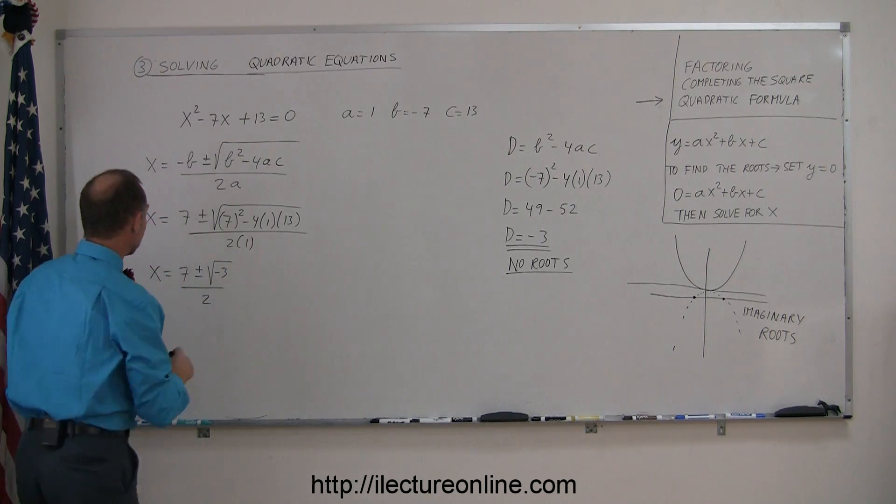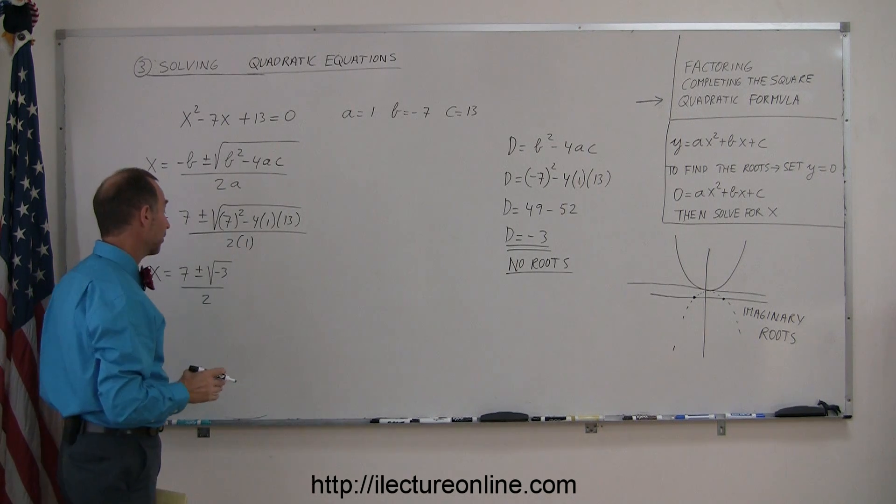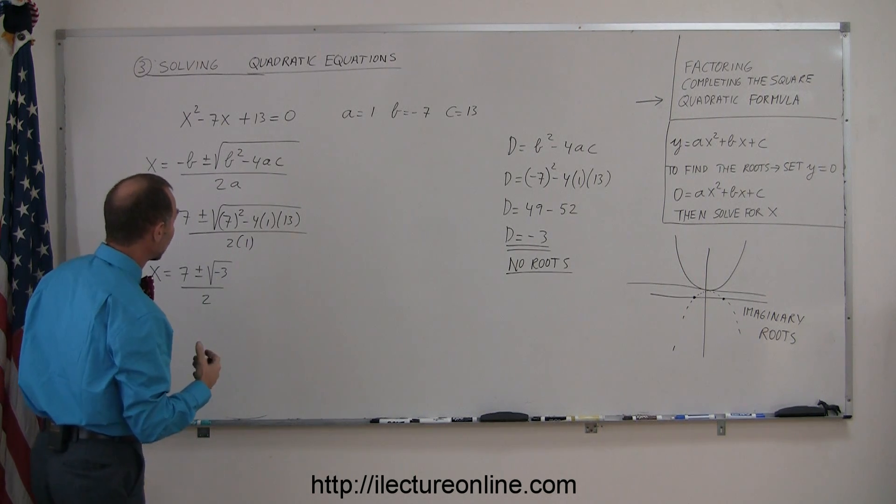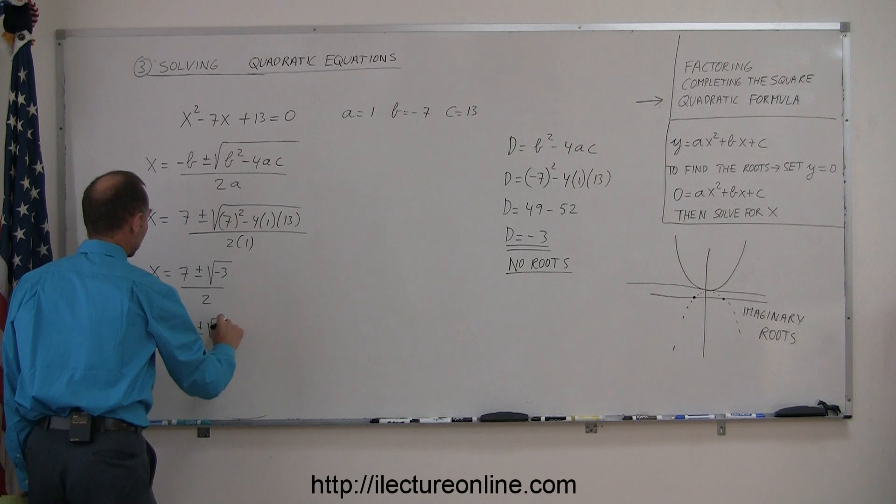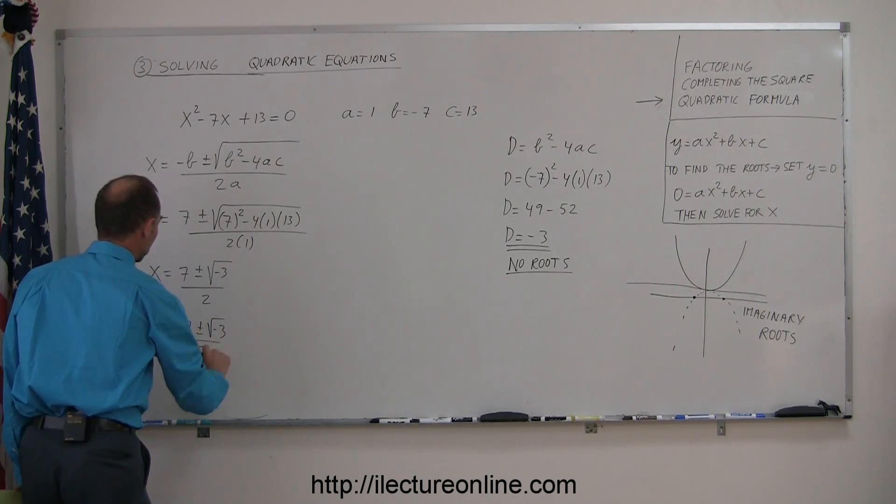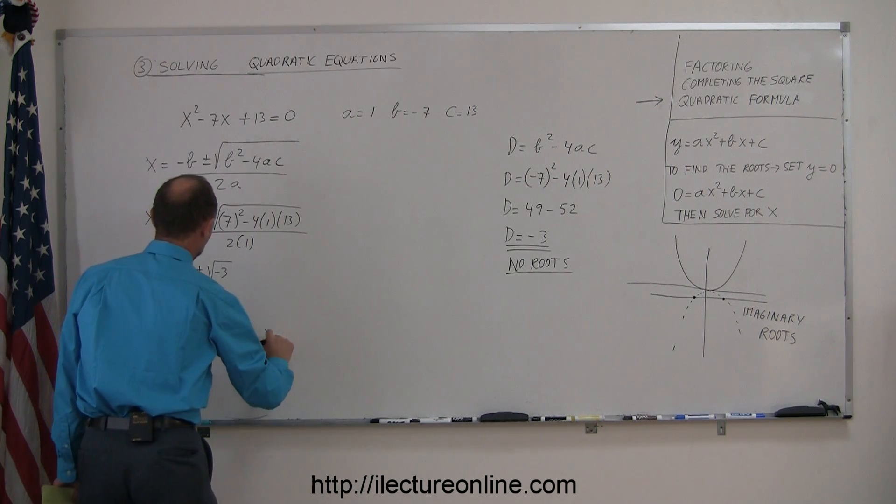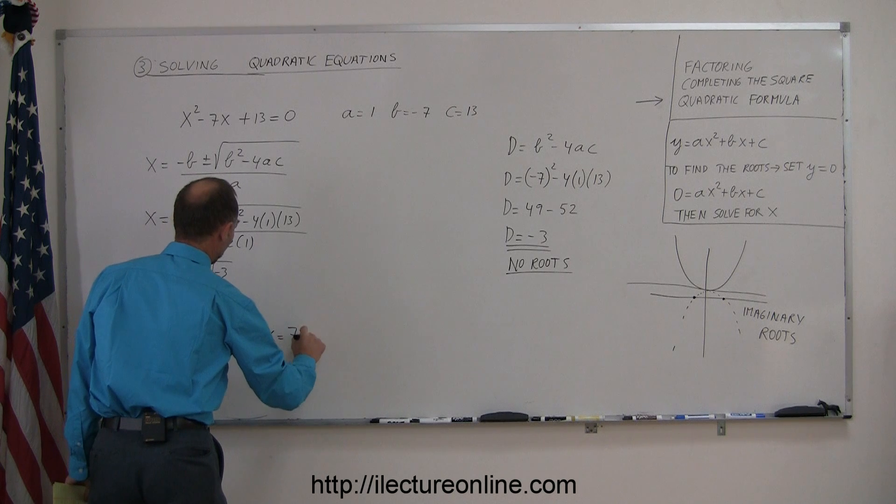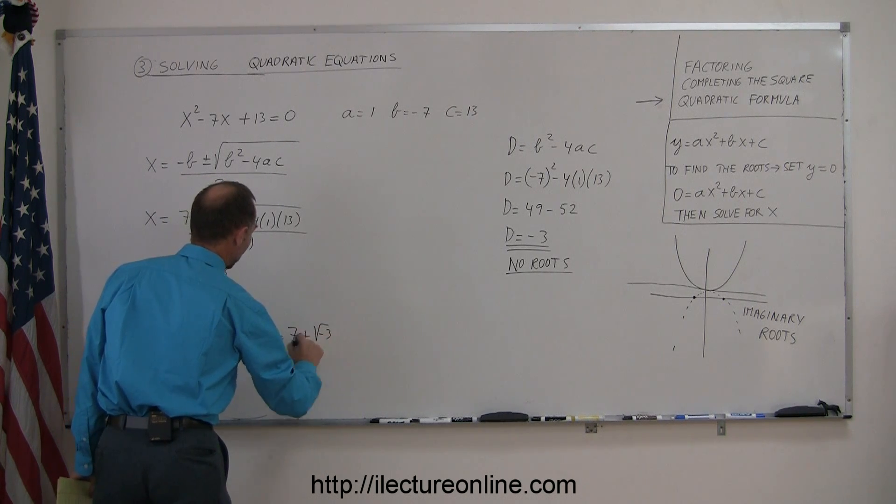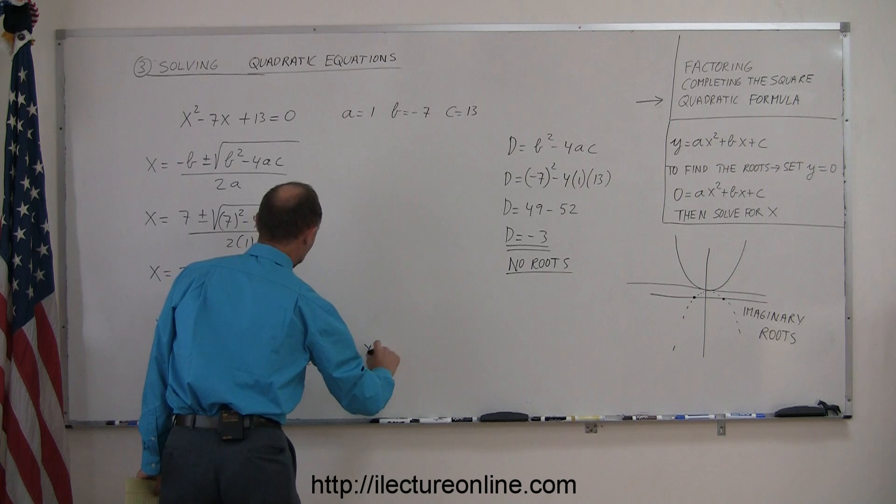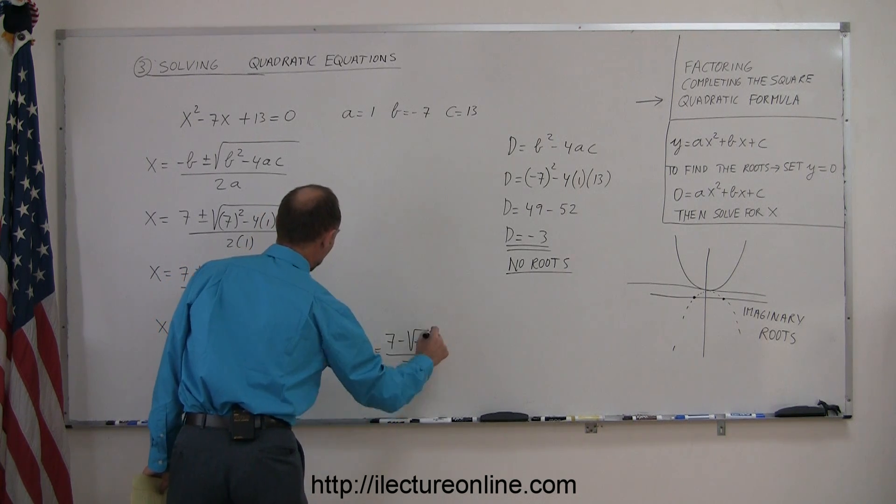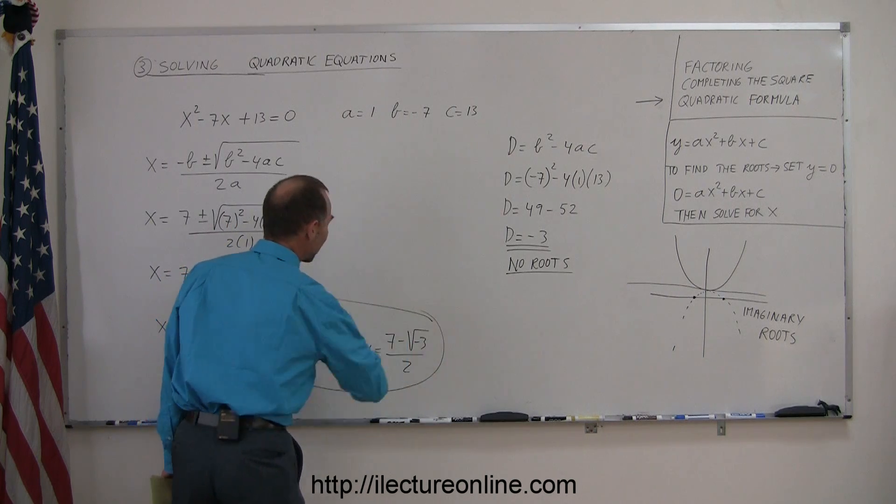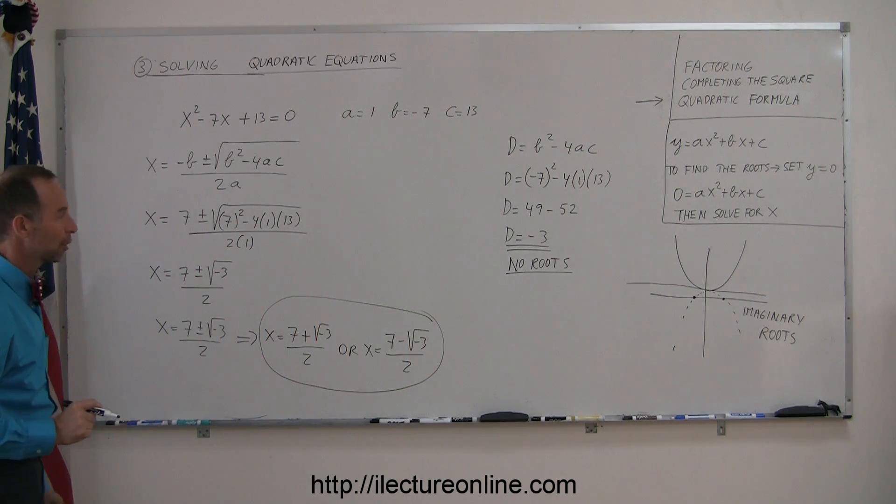And the square root of negative 3 can be written as the square root of positive 3 times i, or x can simply be written as 7 plus or minus the square root of negative 3 over 2, or x is equal to 7 minus the square root of negative 3 over 2. So those are the two imaginary solutions to my quadratic equation.